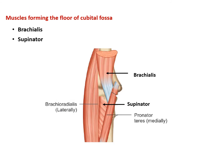The floor of the cubital fossa is formed by two muscles: in the upper part is brachialis, and in the lower part near the apex is the supinator muscle.